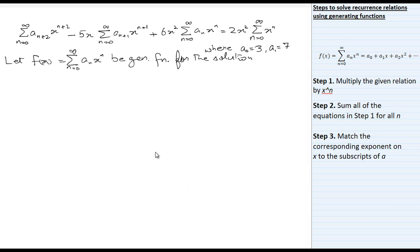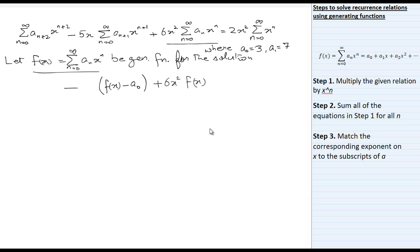Let f(x) be the generating function for the solution. Therefore, Σ aₙ · x^n = f(x), so 6x² · Σ aₙ · x^n = 6x² · f(x) by definition. For Σ aₙ₊₁ · x^(n+1) starting from n=0, we write f(x) − a₀. For Σ aₙ₊₂ · x^(n+2), we write f(x) − a₀ − a₁x.